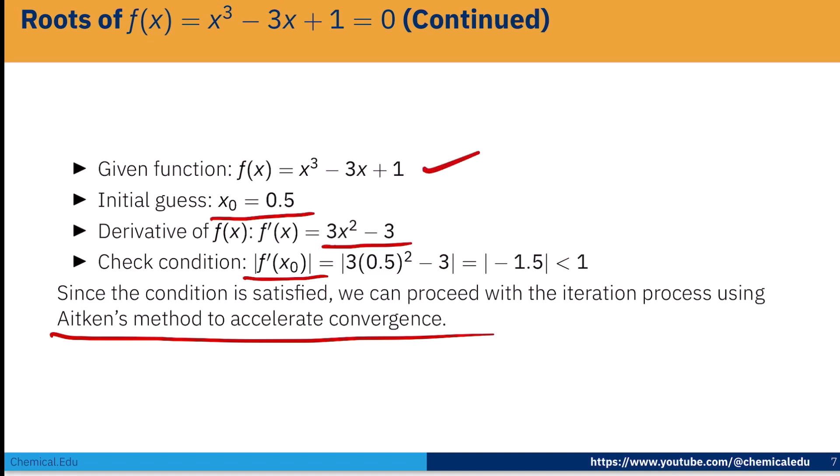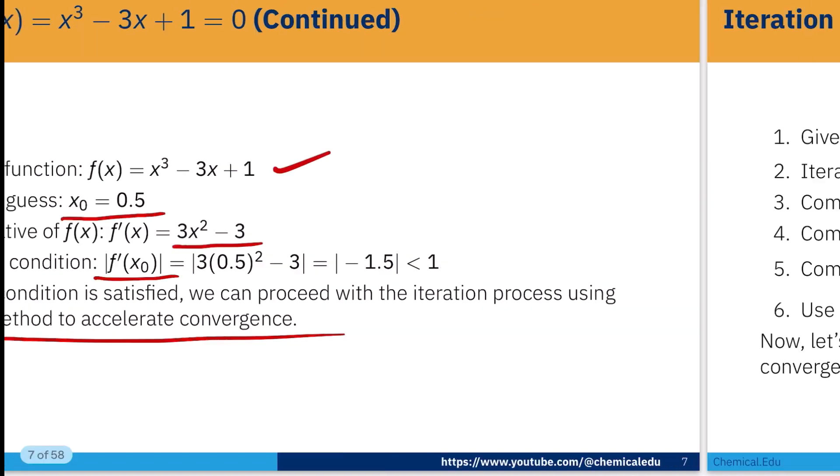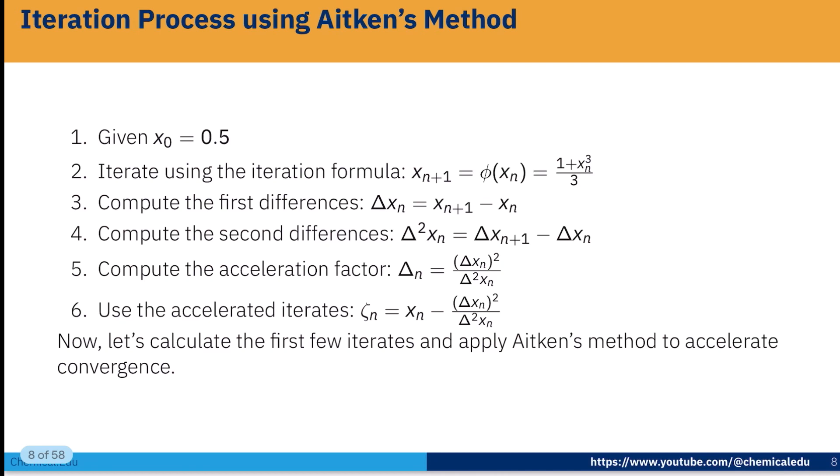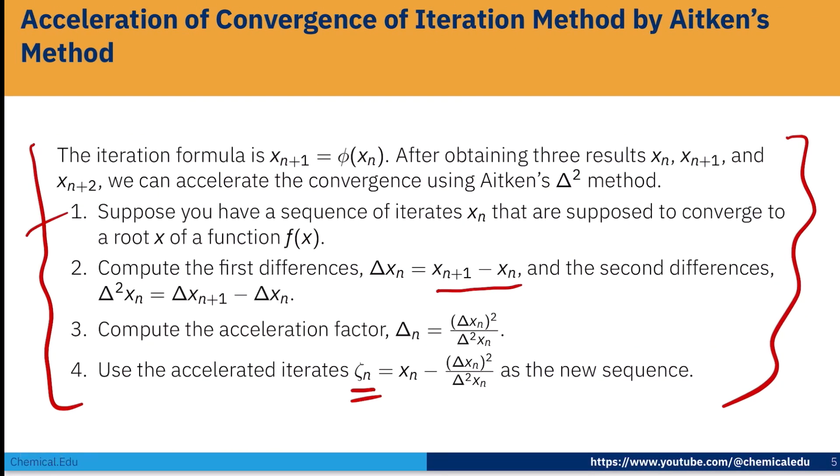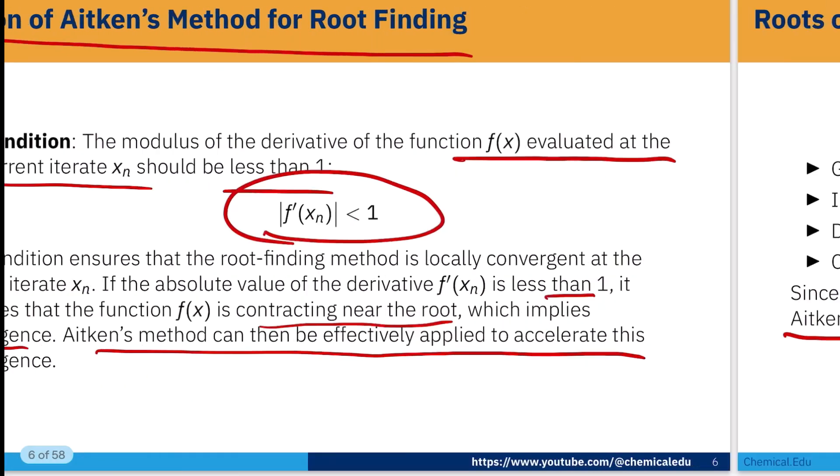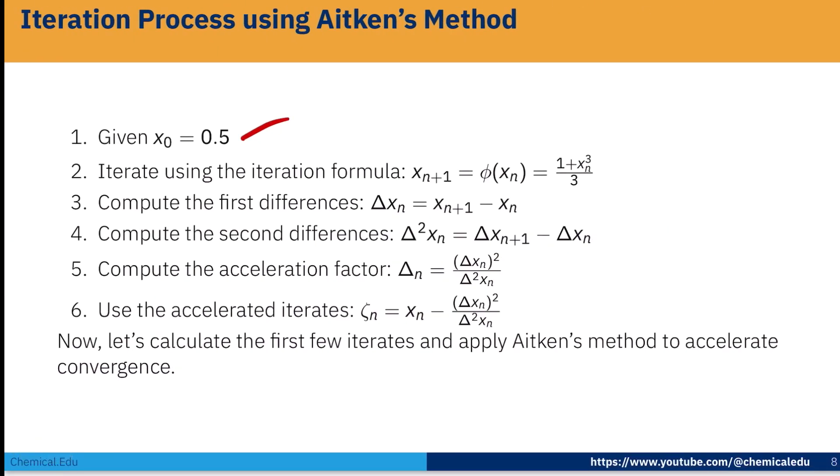Now, this is the function and initial guess. Check the condition and that is satisfied. Now we can use Aitken's method. Given x_0 = 0.5, iterate using the iteration formula. We have to convert this form so that x_{n+1} = φ(x_n). Here x_{n+1} = φ(x_n) = (1 + x_n³)/3.